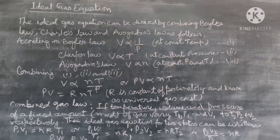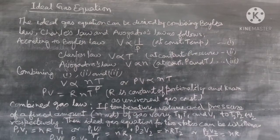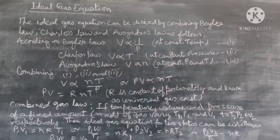Real gases follow these laws only under certain specific conditions when forces of attraction are practically negligible. In all other situations, real gases deviate from ideal behavior. The combination of various gas laws — Boyle's law, Charles' law, and Avogadro's law — leads to development of a mathematical relation which relates four variables: pressure, volume, absolute temperature, and number of moles of ideal gas. The equation so formulated is called the ideal gas equation.